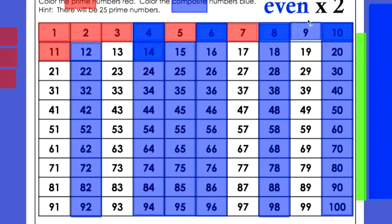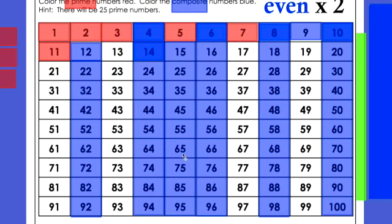Most even numbers are composite — all the ones with 2, 4, 6, 8, or 0 in the ones place are all composite, so I made them blue. Also the fives: anything with a 5 in the ones place is composite, because like 15 — that's 1 times 15, but also 3 times 5. And 25 has 5 times 5; 35 has 7 times 5. So anything with 5 or 0 in the ones place is composite.